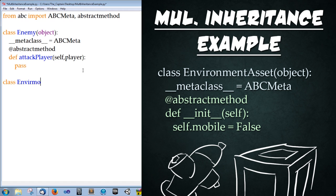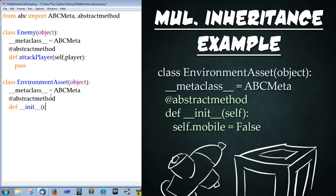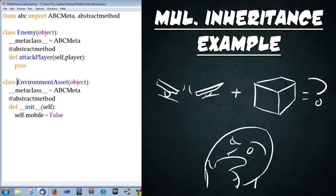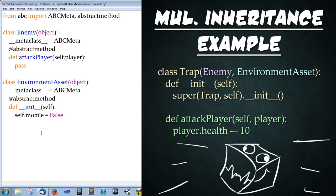Now we're going to begin a new class: class EnvironmentAsset, inheriting from object — and copy those same two metaclass lines. Then define the constructor: def __init__(self), colon, enter, and type self.mobile equals False. This is just to say that environment assets cannot move. Now we're going to inherit from both of these classes. A good example of an environment asset that would also be an enemy asset? A trap. So let's create a trap class: class Trap, inheriting from both Enemy and EnvironmentAsset.